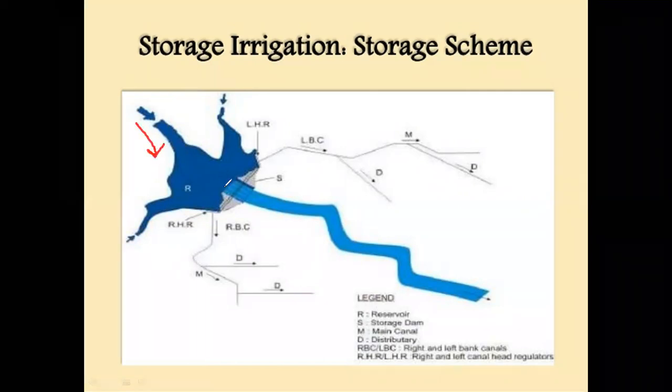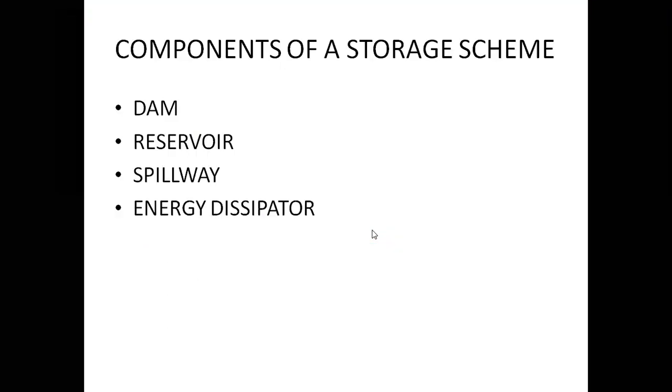Here you can see this is the direction of flow of the river. As soon as the obstruction is constructed, the river water encounters an obstruction and immediately the water spreads here and gets stored in the form of a reservoir. Now through these, you can divert this stored water - you can see left bank canal, right bank canal, and through many other ways this water can be distributed as per the requirement.